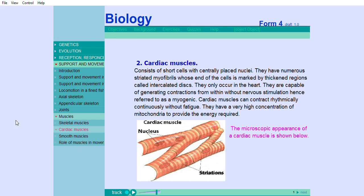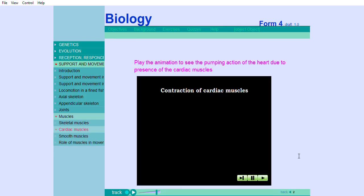hence referred to as myogenic. Cardiac muscles can contract rhythmically and continuously without fatigue. They have a very high concentration of mitochondria to provide the energy required. The microscopic appearance of a cardiac muscle is shown below. Play the animation to see the pumping action of the heart due to the presence of cardiac muscles.